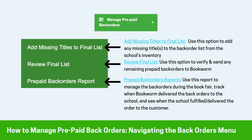To access other options related to managing prepaid back orders, click the Manage Prepaid Back Orders option located in the BMAPS dashboard. This should bring you to a drop-down in which you have three options: Add Missing Titles to Final List, Review Final List, and Prepaid Back Orders Report.